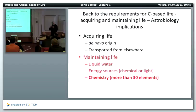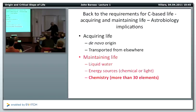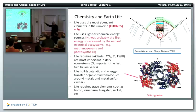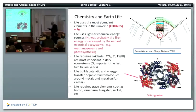Maintaining life as we know it requires liquid water, energy sources, and chemistry. Hydrogen was probably the first energy source used by the earliest microbial ecosystems, and there's a lot of evidence for this. I like the Nesbitt and Sleep paper in Nature, where the discussion is about how the earliest organisms were high-temperature hydrogen utilizers and formed something called a biofilm.